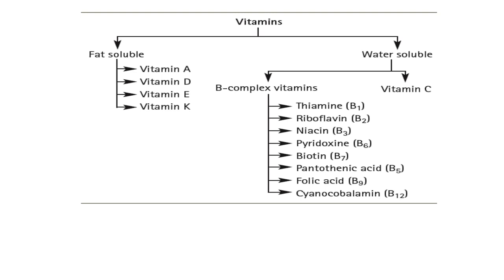This picture shows the classification of vitamins. Vitamins are classified into two categories: the first is fat-soluble and the second is water-soluble. Examples of fat-soluble vitamins are vitamin A, vitamin D, vitamin E, and vitamin K. In water-soluble vitamins, there are two categories: first is the B complex vitamins, and second is vitamin C.